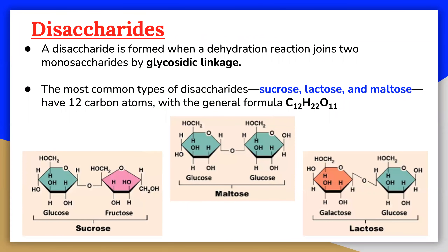A disaccharide is the sugar formed when two monosaccharides are joined by glycosidic linkage. Like monosaccharides, disaccharides are simple sugars soluble in water. Three common examples are sucrose, lactose, and maltose. Disaccharides have 12 carbon atoms with the general formula C12, H22, O11.